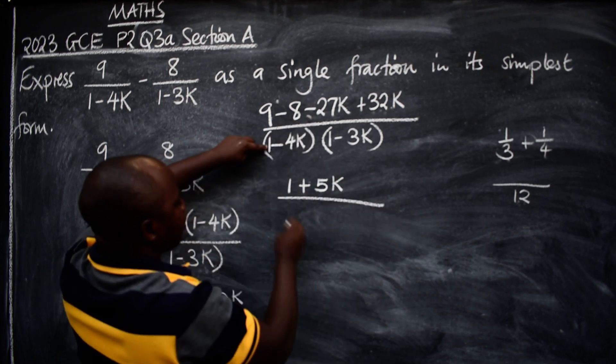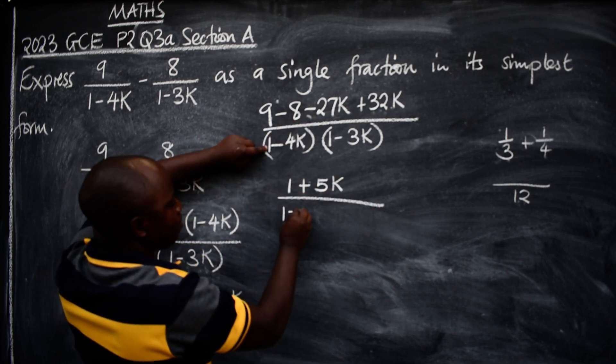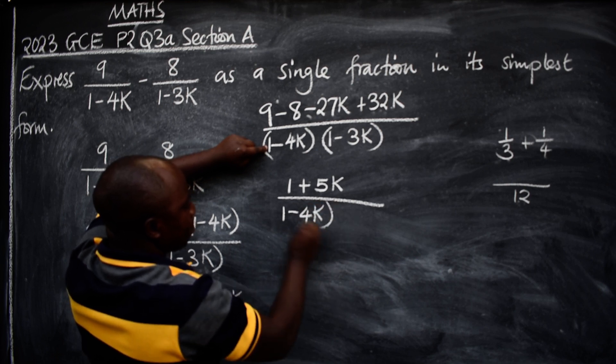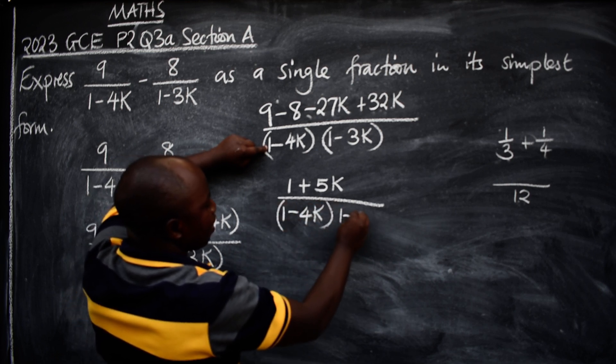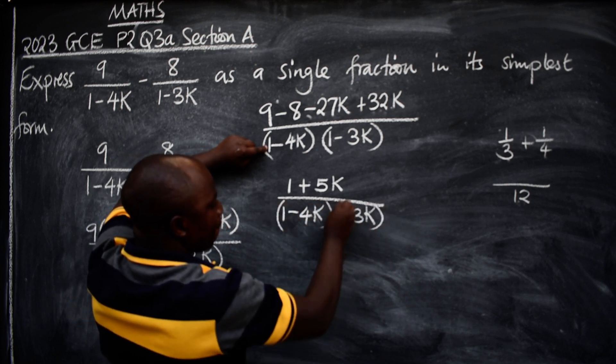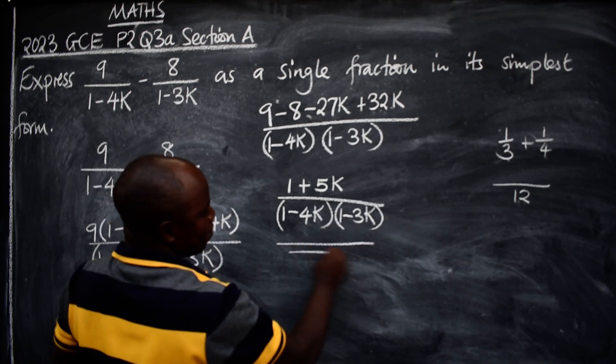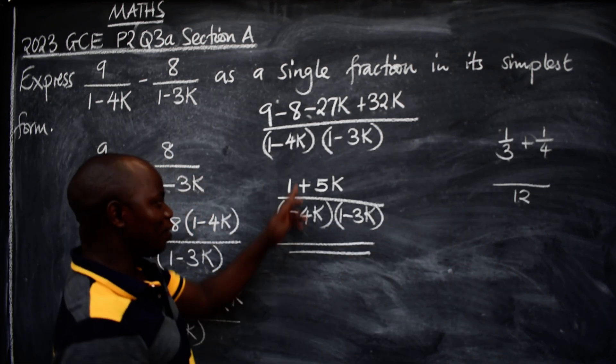Over the denominator 1 minus 4k, then the other one 1 minus 3k. This is your final answer, one fraction. That is the meaning of single fraction.